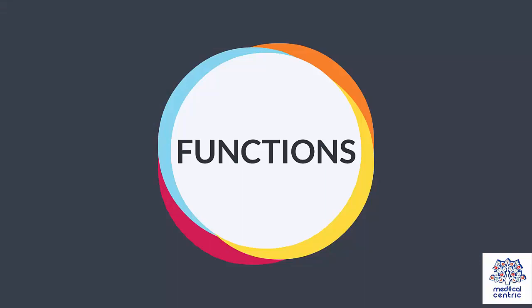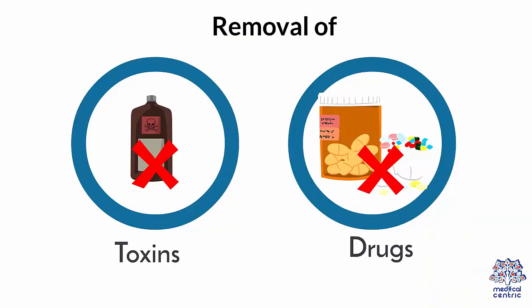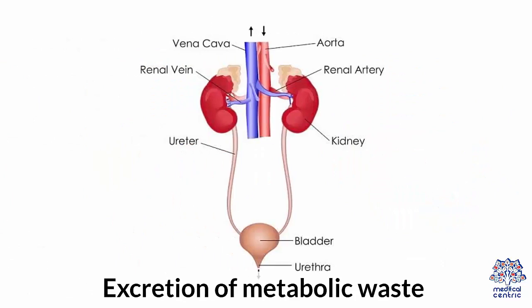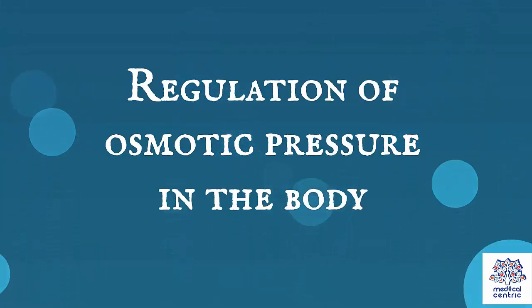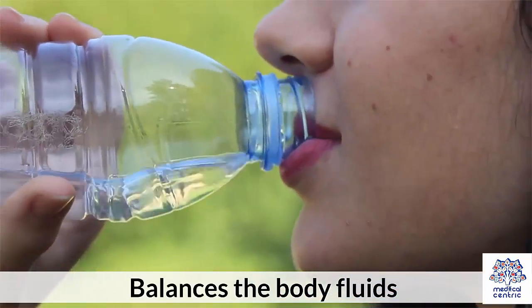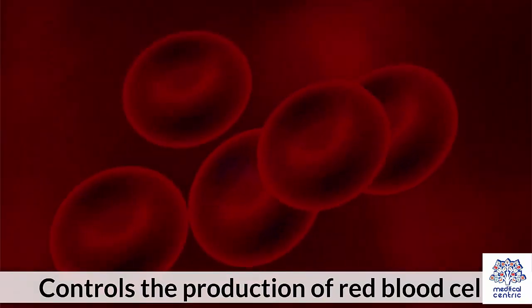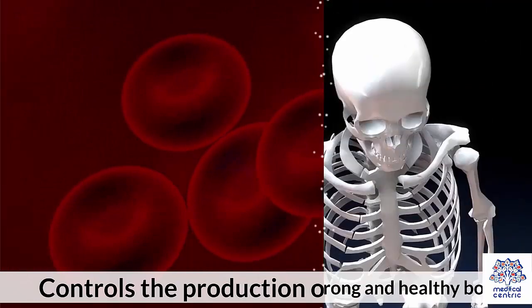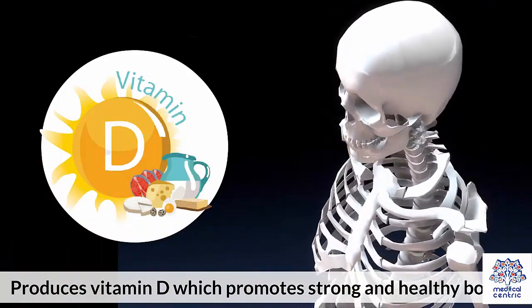Functions of the kidney include: blood pressure regulation, removal of toxins and drugs, excretion of metabolic waste, regulation of osmotic pressure in the body, balancing body fluids, controlling the production of red blood cells, and producing vitamin D, which promotes strong and healthy bones.